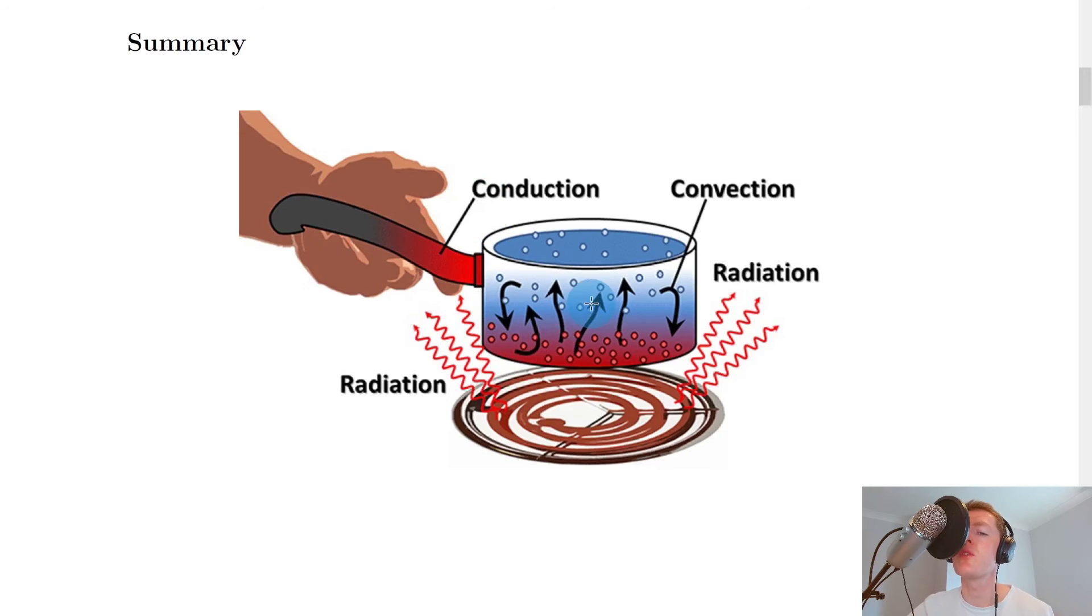We've also got the water inside the pot, which as it heats up at the bottom becomes less dense than the cooler water above it. Therefore the hot water is going to rise to the surface, and the cooler water will fall down to replace it. In this way we get a sort of convection current inside the pot.